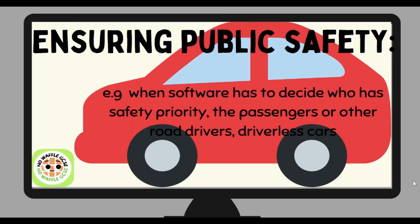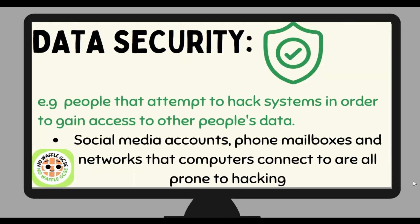Ensuring public safety is another key ethical issue. For example, when software has to decide who has safety priority — the passengers or other road users — in the case of driverless cars. The person making the vehicle is the one making those decisions, and therefore how will it be able to decide if both choices would compromise lives?